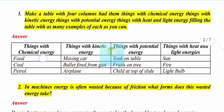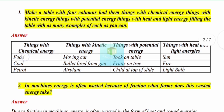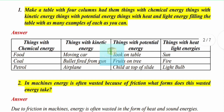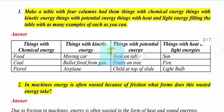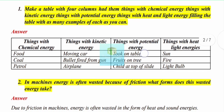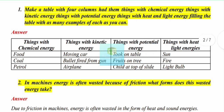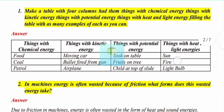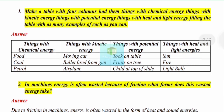You need to give examples for each column. First, give examples of things that store chemical energy. Second, give examples of kinetic energy. Third, give examples of potential energy. Last, give examples of light and heat energy.